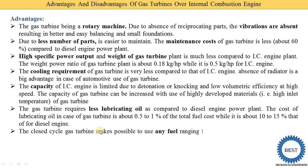A closed cycle gas turbine makes it possible to use any fuel ranging from kerosene to heavy oil and even pit coal slurry. In a gas turbine power plant, there are two types of systems: open cycle and closed cycle. In the closed cycle, we can use any type of fuel including kerosene, heavy oils, and even coal slurry.